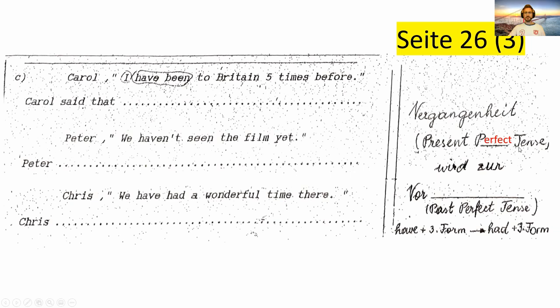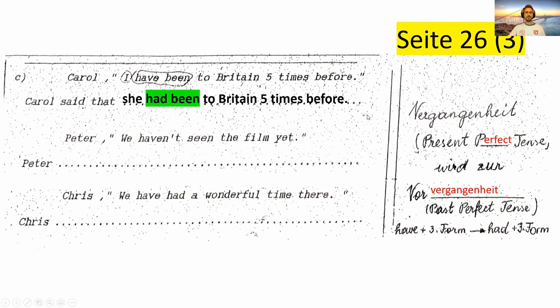Und 'will' auch — so wie vorher auch — zur Vorvergangenheit, past perfect tense. Also 'have' plus die dritte Form wird zu 'had' plus die dritte Form. Das ist eines der einfacheren Beispiele, da du wirklich nur aus dem 'have' ein 'had' machen musst; alles andere bleibt gleich, außer die zusätzlichen Wörter, die sich noch verändern werden. Carol: 'I have been to Britain five times before.' Carol said that she had been to Britain five times before. Du unterstreichst auch wieder das 'have been' und daraus wird das 'had been'.